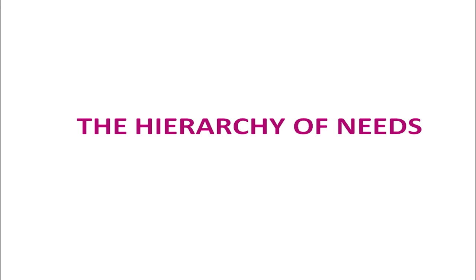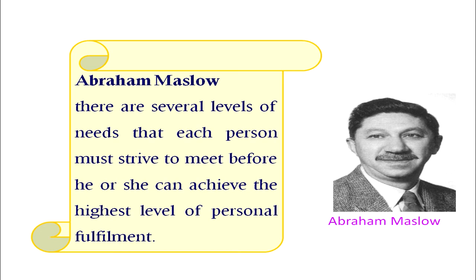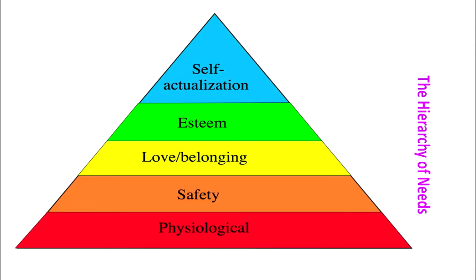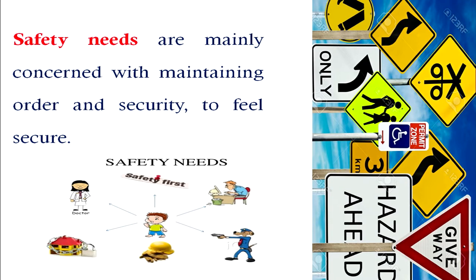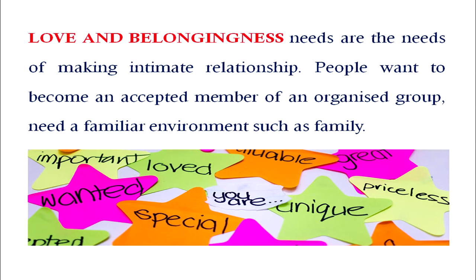Now let us move to the hierarchy of needs. Abraham Maslow gave the concept of needs. There are several levels of needs that each person must strive to meet before he or she can achieve the highest level of personal fulfillment. Physiological needs are the most potent and lowest level of all the needs. Safety needs are mainly concerned with maintaining order and security to feel secure. Love and belongingness needs are the needs of making intimate relationships — people want to become an accepted member of an organized group and need a familiar environment such as family.